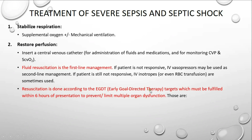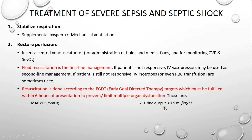A very important step in restoring perfusion is that fluid resuscitation must be done according to the early goal-directed therapy targets, which should be fulfilled within six hours of presentation in order to prevent or limit multiple organ failure. Those targets are: first, achieve a mean arterial pressure of 65 mmHg or more; second, achieve a urine output of 0.5 mL/kg/hour or more; and third, achieve a central venous pressure of 8 to 12 mmHg.